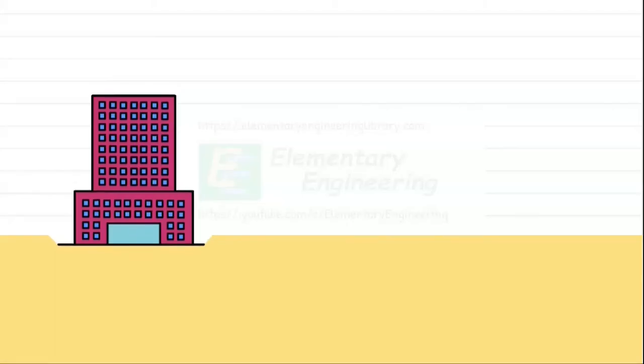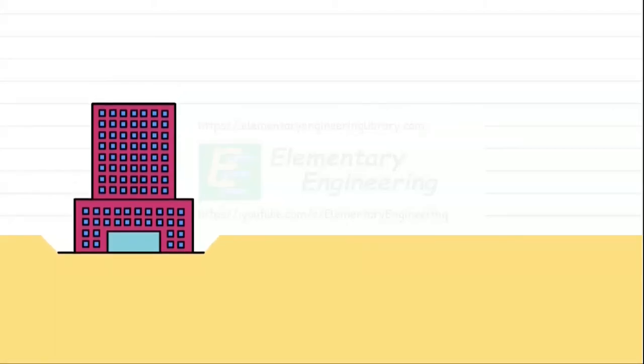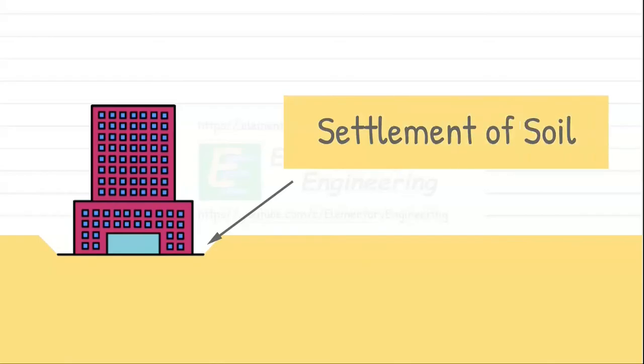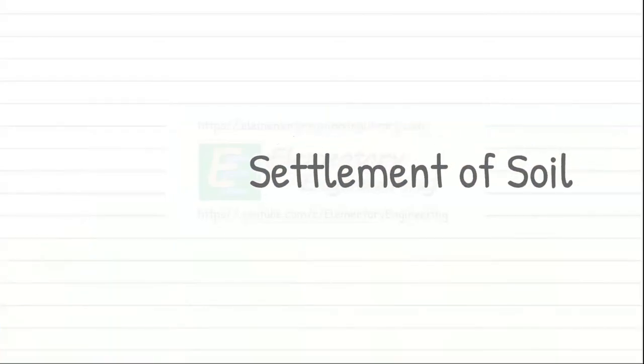When heavy buildings or structures are built on the ground, they make the ground compress a little over time due to their weight. This compression of soil caused by factors like the weight of building is known as the settlement of soil. It has been described in detail in our previous video.